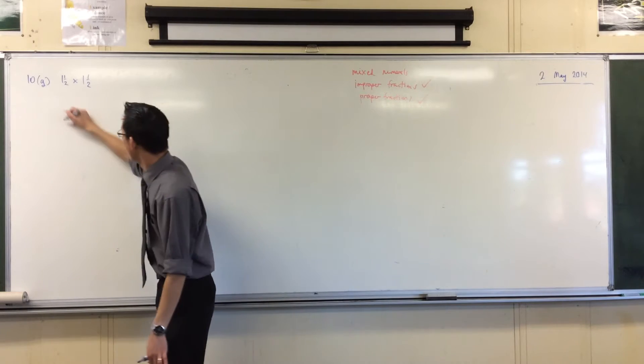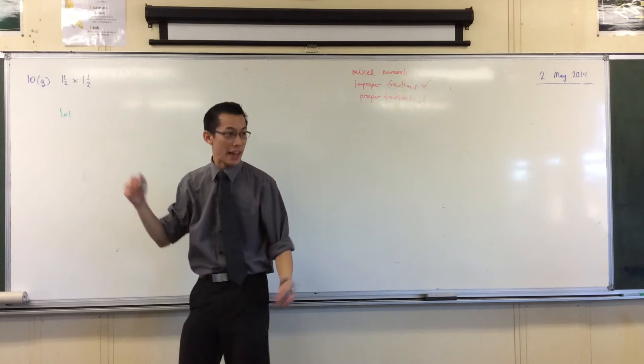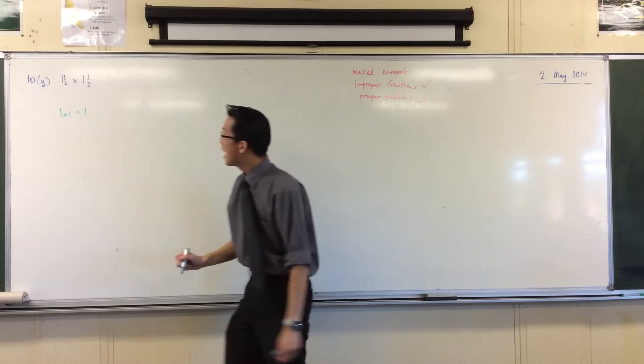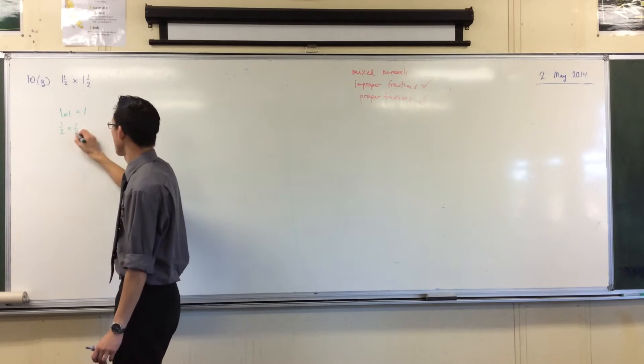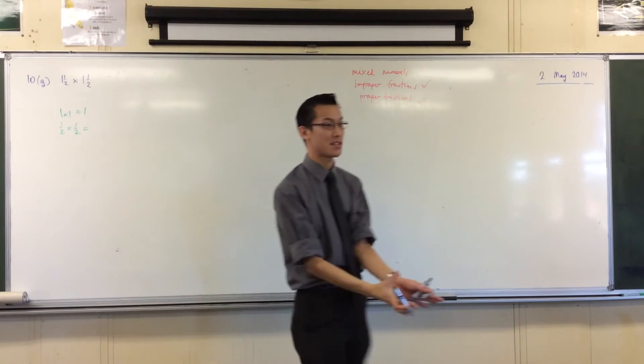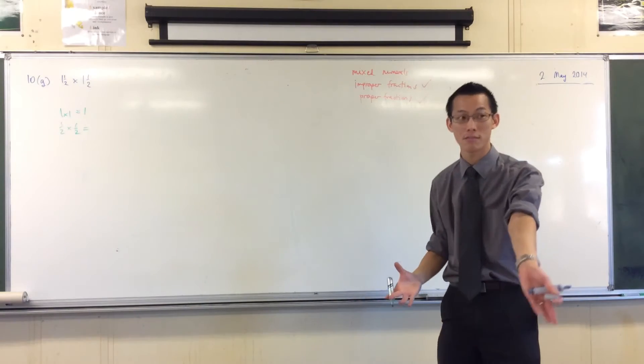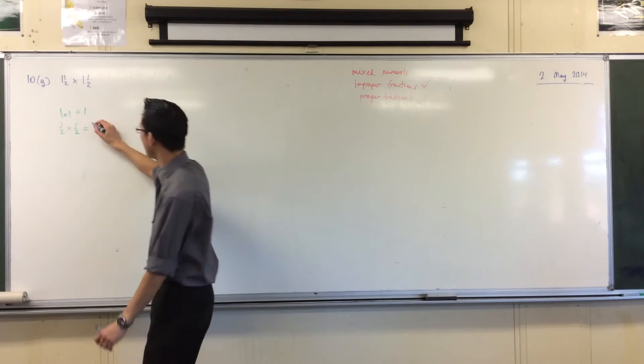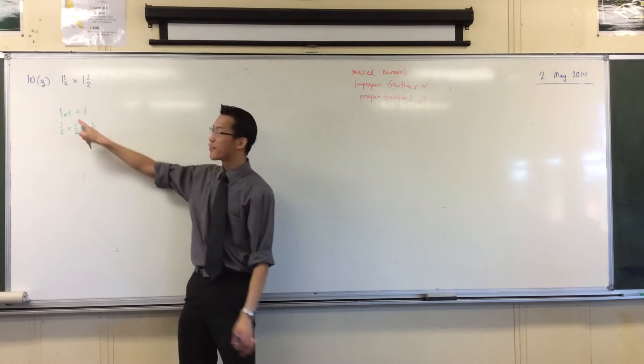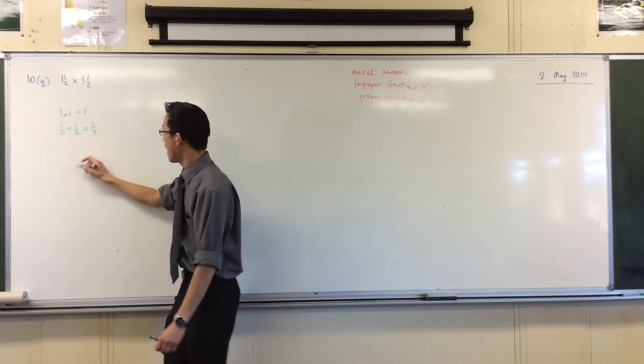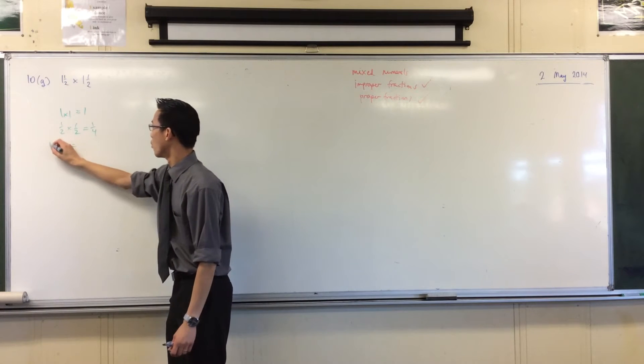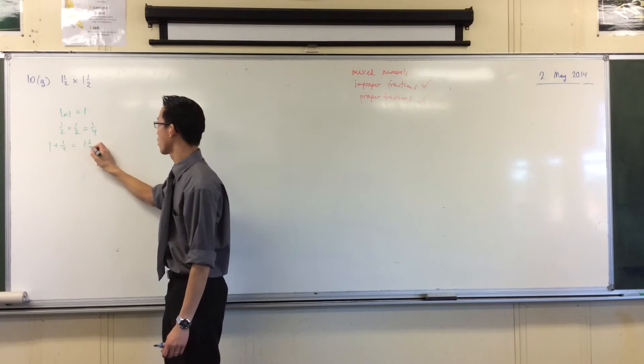Now, one of the ways I've seen a lot of you do is say, well, I've got this times this, right? I don't really know how to do that, so I'll separate them out. I'll do the whole numbers first. I'll go 1 times 1, and that's 1. And then I've got a half and a half, so I'll go a half times a half. And because that's a proper fraction, it's easy to multiply. Half of a half is a quarter, right? So you're like, I've got 1 times 1 here. I've got half times half here. I should put them together, and you get 1 plus a quarter. That's 1 and a quarter, okay?